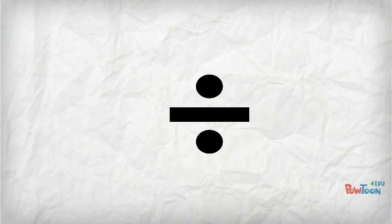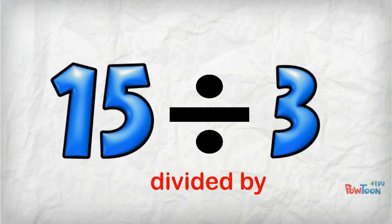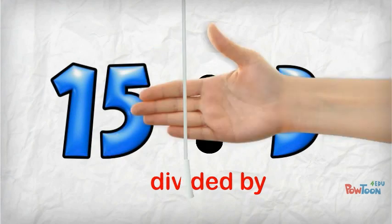This is the math sign for division. We read it as divided by. So we would read this as 15 divided by 3. Let's look at how it works.